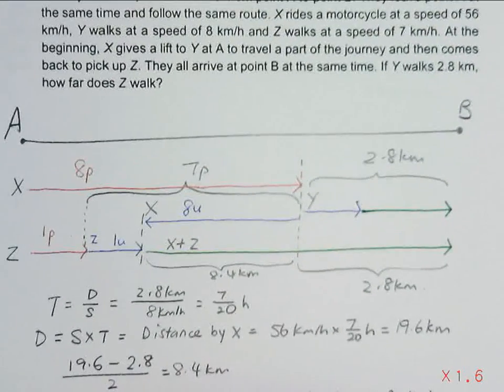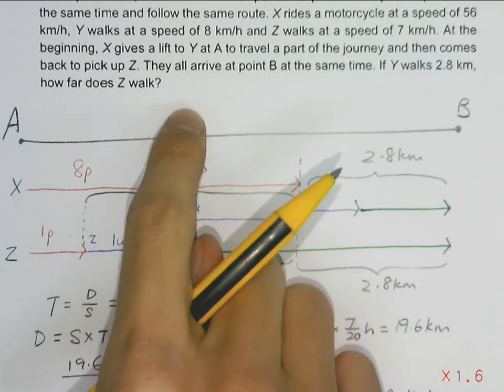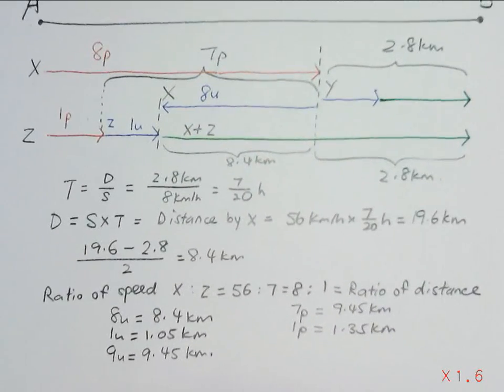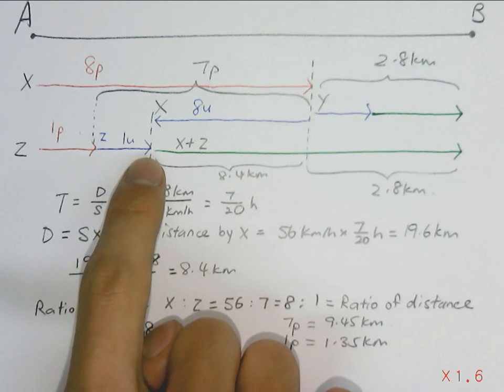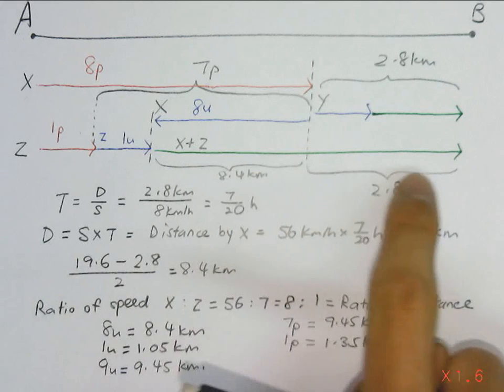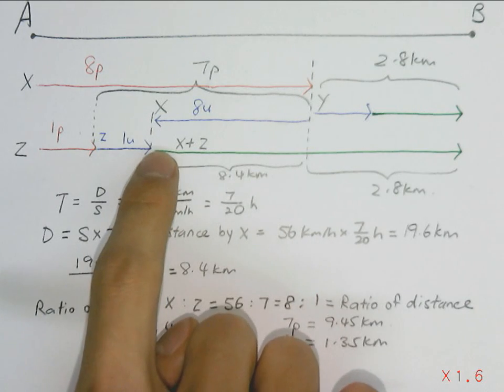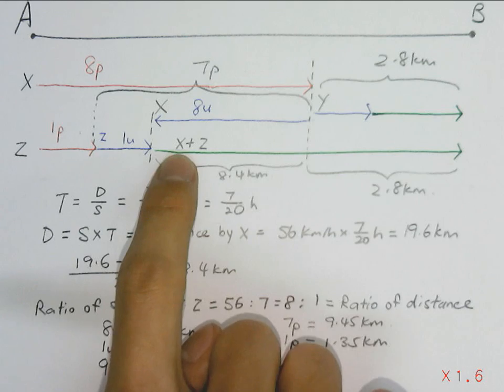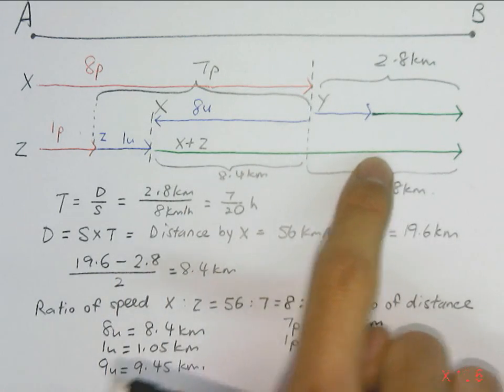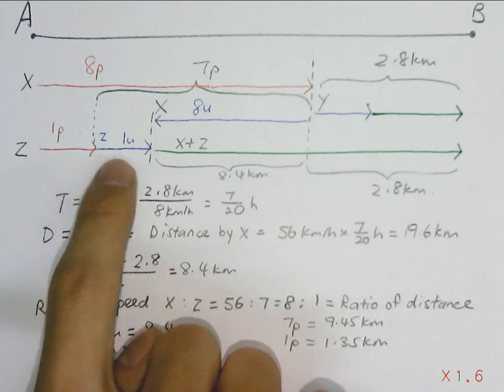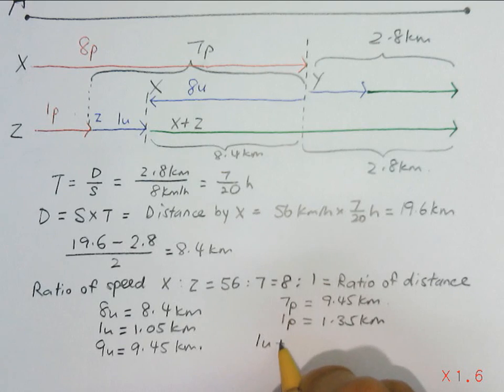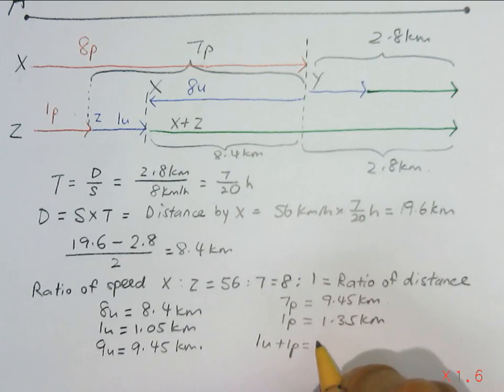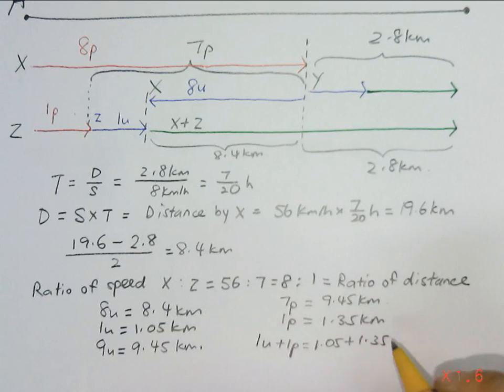Now the question asks, how far does Z walk? Looking at the diagram, Z only walks for this 1 part and 1 unit. Because the rest of it, which is the green arrow, is when X picks up Z. So this will be following X's speed. So Z only walks for 1 unit and 1 part distance. So adding them up, we can easily get the answer. 1 unit plus 1 part: 1.05 plus 1.35, a distance of 2.4 km Z walks.